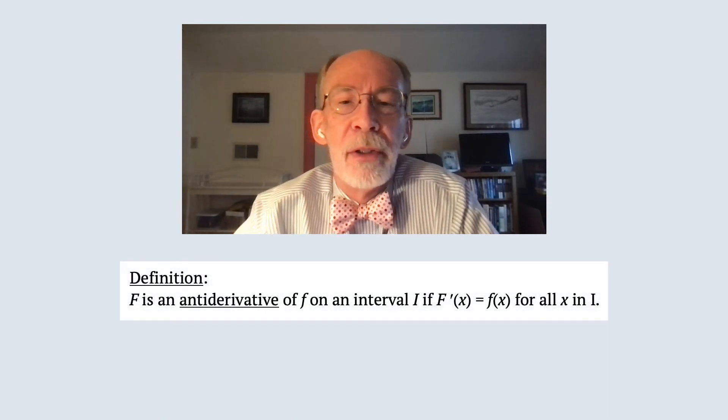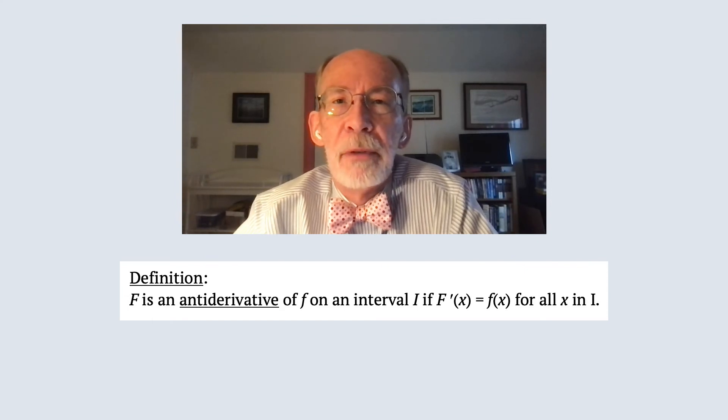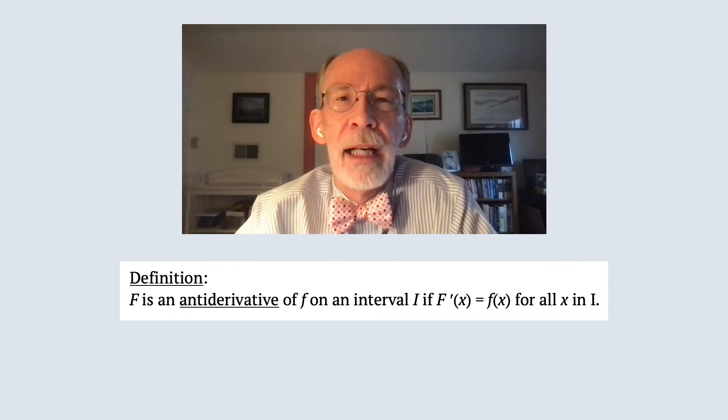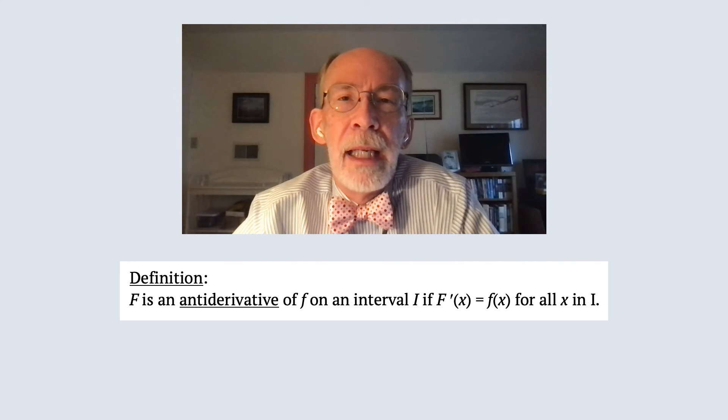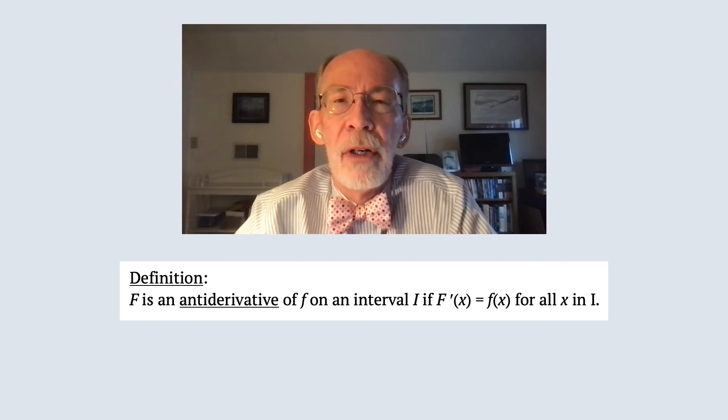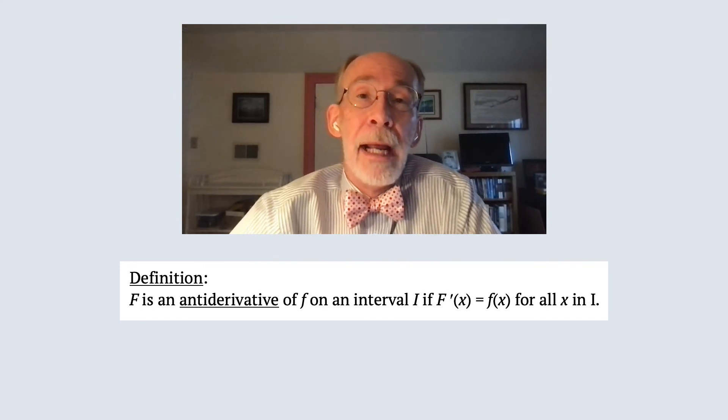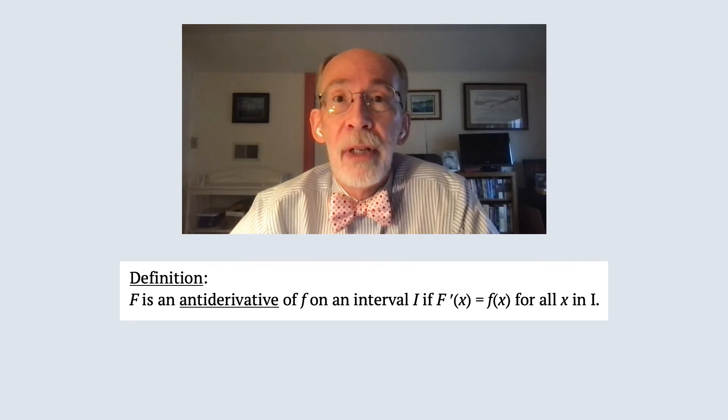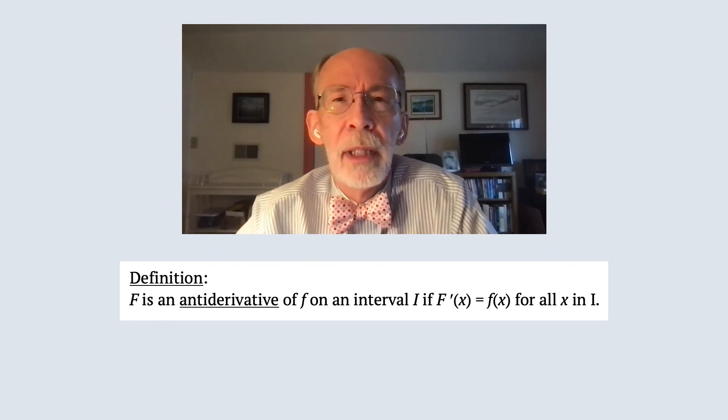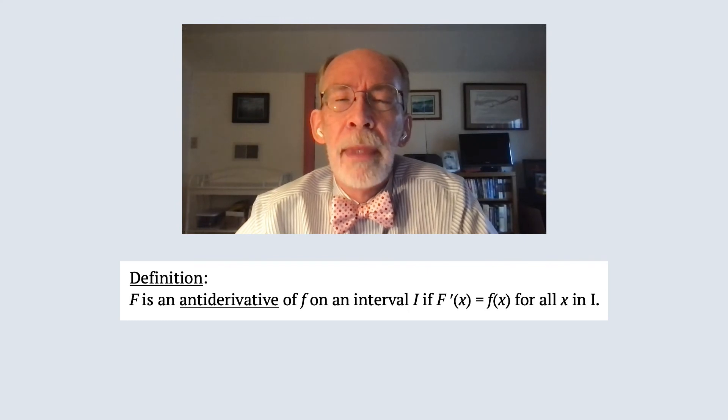So in order to make a formal statement of the theorem, we're going to have to have a way of referring to this question of sort of undifferentiating. And so we're going to define the term antiderivative. And we're going to say that some function big F is an antiderivative of some function little f on some interval i, if big F prime of x equals little f of x for all x in the interval.